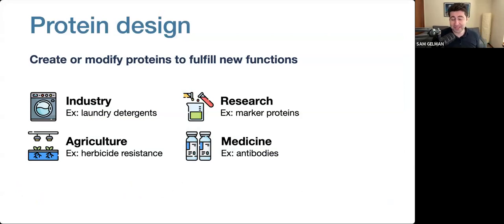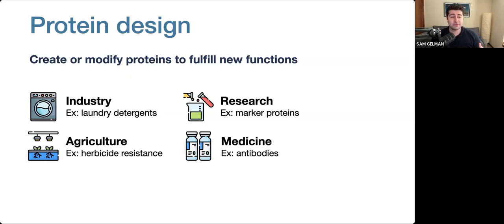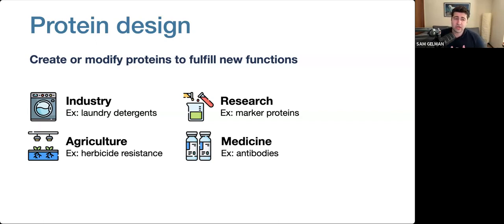Proteins are extremely important for living organisms. They play vital roles in basically every process in our bodies, from speeding up chemical reactions to fighting infections. But proteins also have potential beyond their natural biological roles. With protein design, we want to create or modify proteins to fulfill new functions. For example, in healthcare, monoclonal antibodies have been designed to help treat COVID. In the environmental sector, the enzyme PETase was engineered to break down plastic, which can help with recycling. And in renewable energy, enzymes have been designed to help convert biomass into biofuels efficiently. These are just some of the real-world applications where protein design can have a transformative impact.